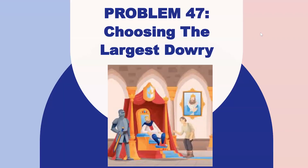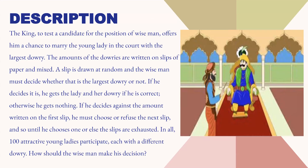Hello everyone. Today we will discuss problem 47 of the 50 challenging problems. The problem is choosing the largest dowry. Here is the description of the problem.